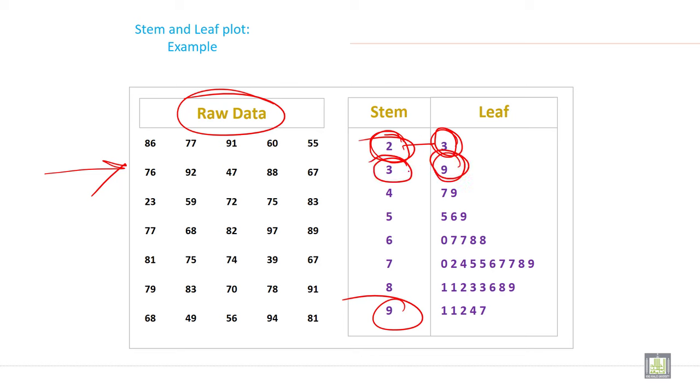It means 39, only one here, only one data here. If you write 4 in the tens stem and 7, it is 47, and another number is 49. So here two data, two information in the tens digit or stem digit. If you write 5 and in the units digit if you write 5, it is called 55, then 56, and then 59. So here three numbers. Here 60, 67, 67, 68, and 68, here 5 numbers, and so on.